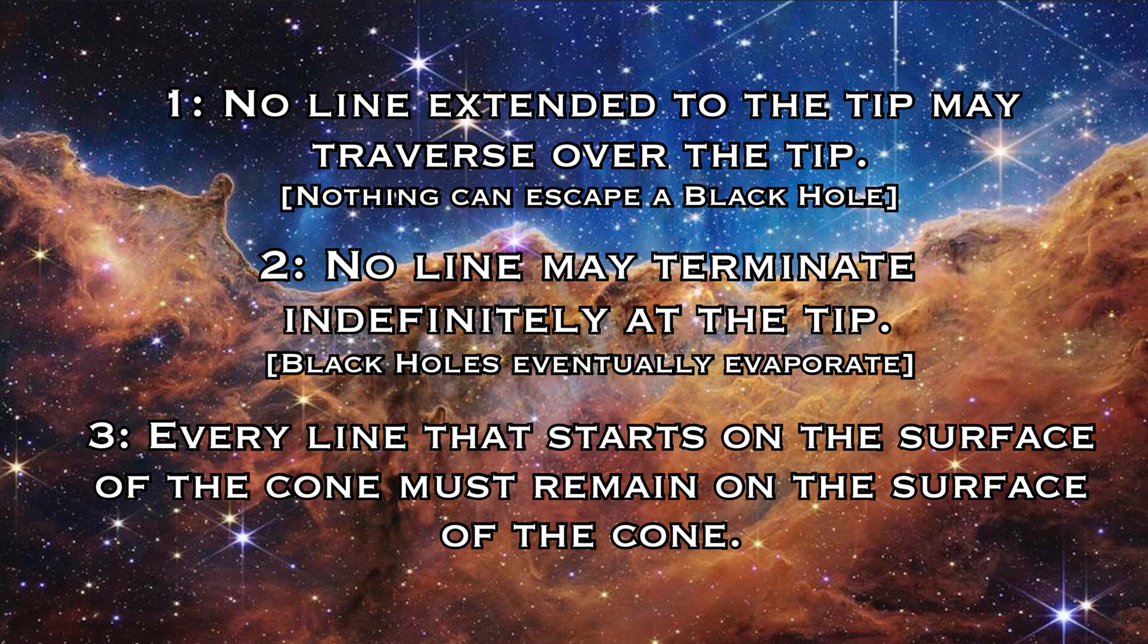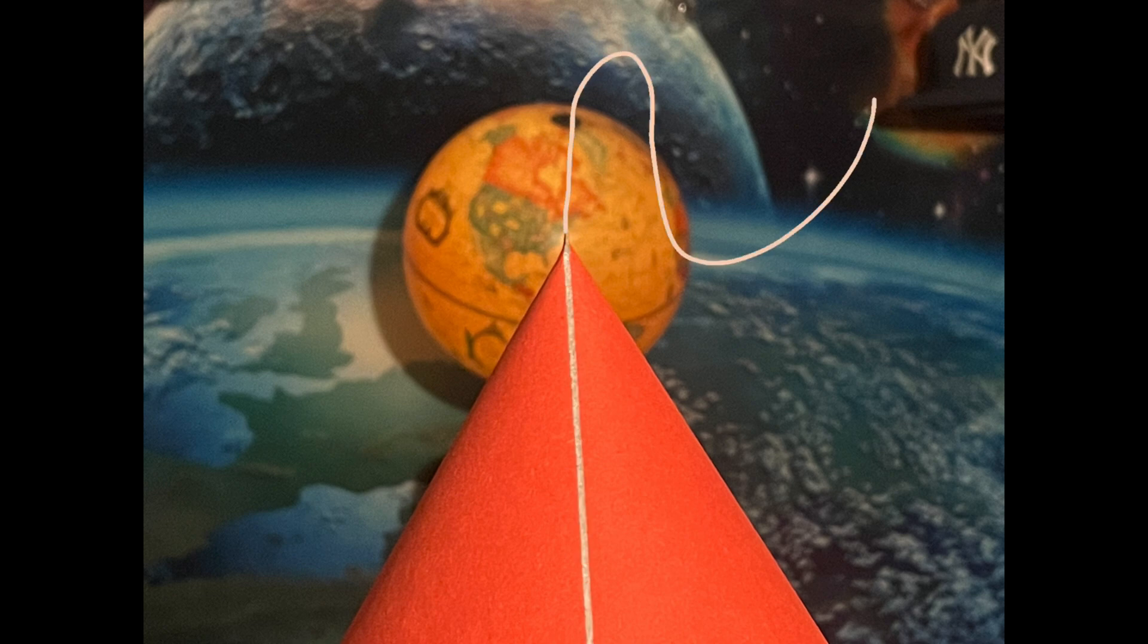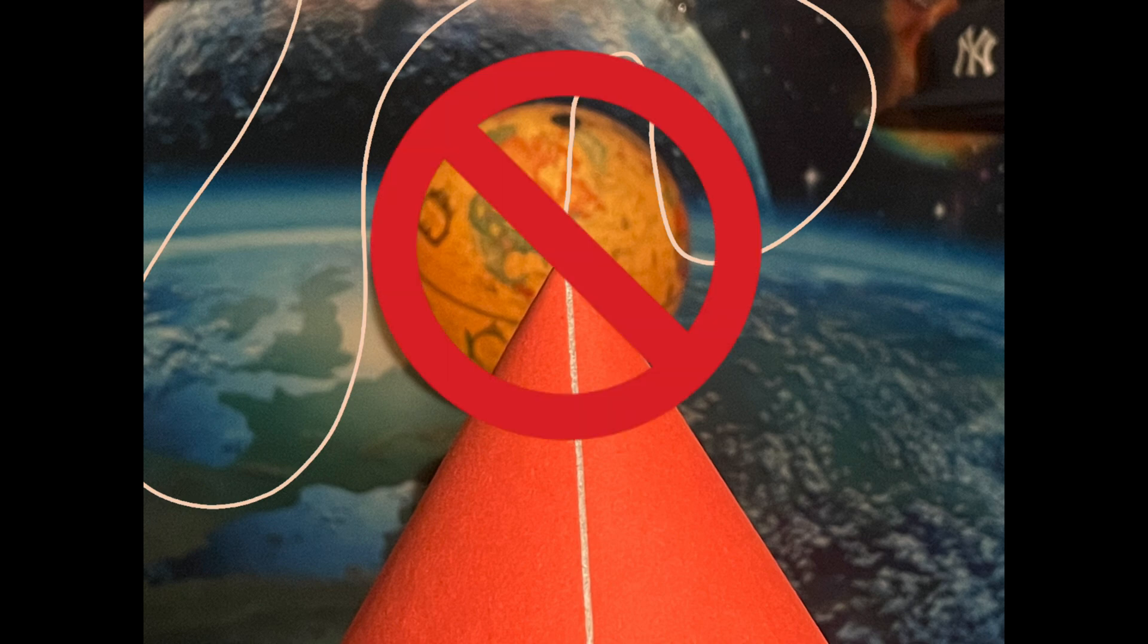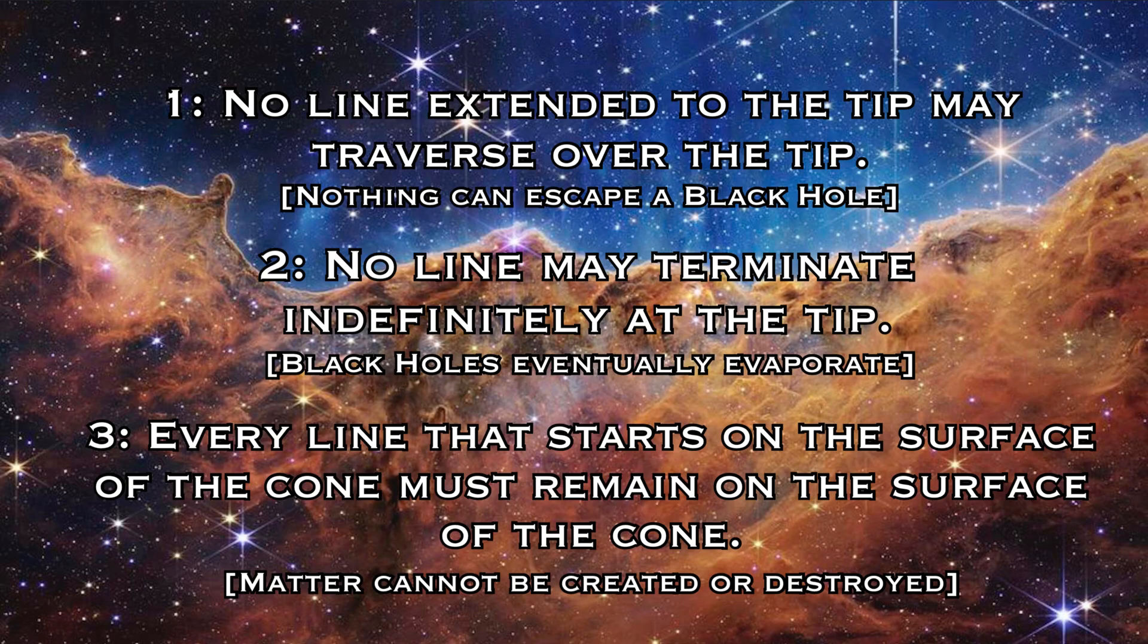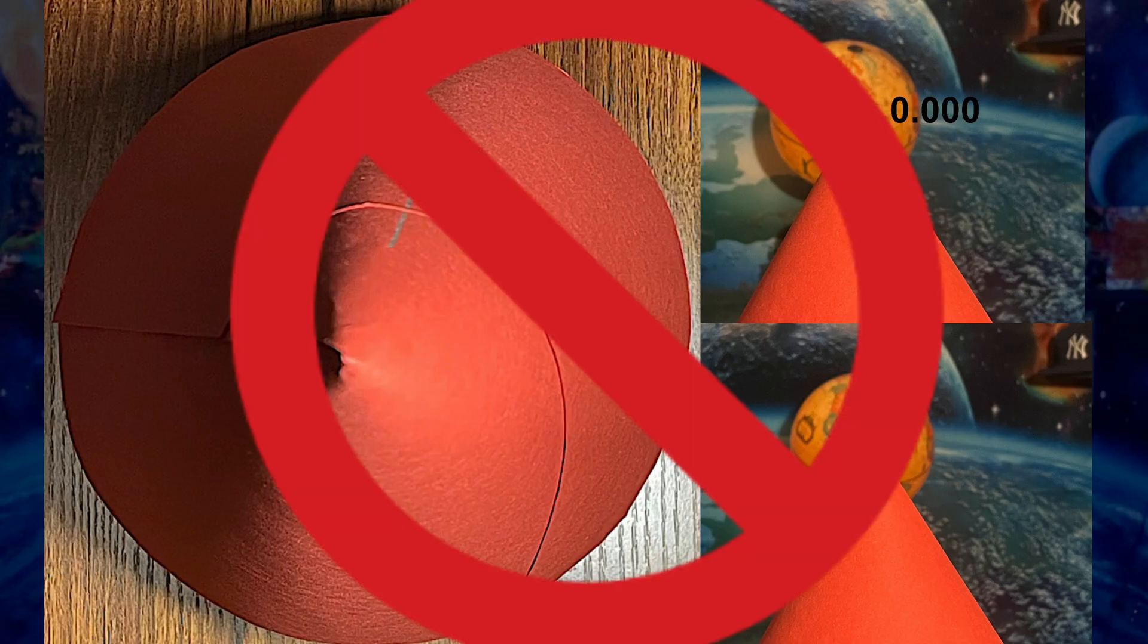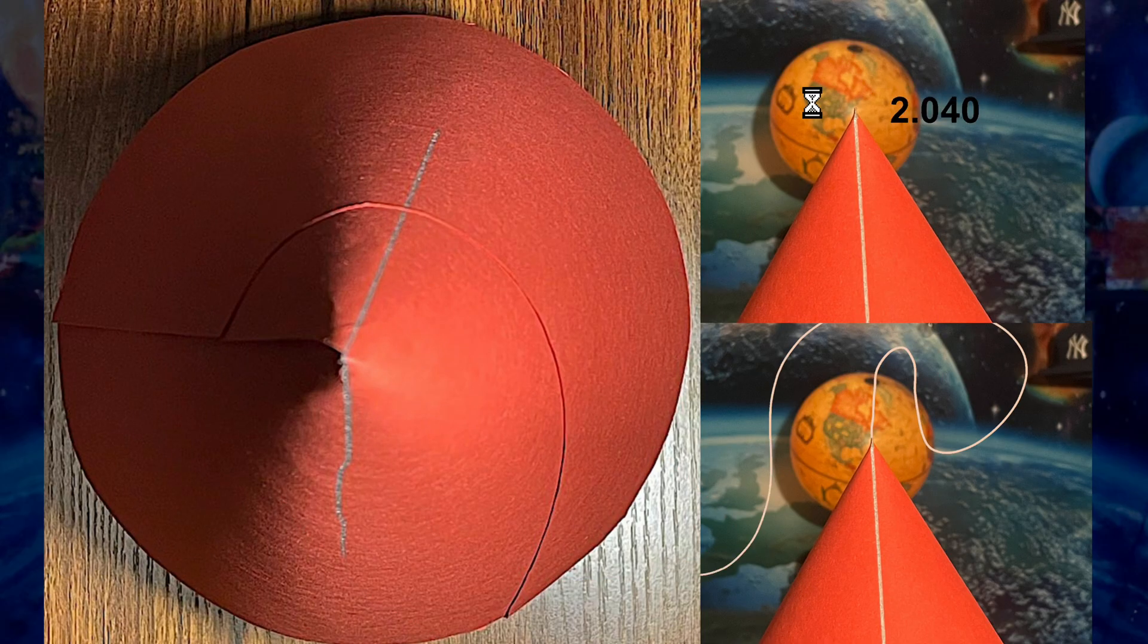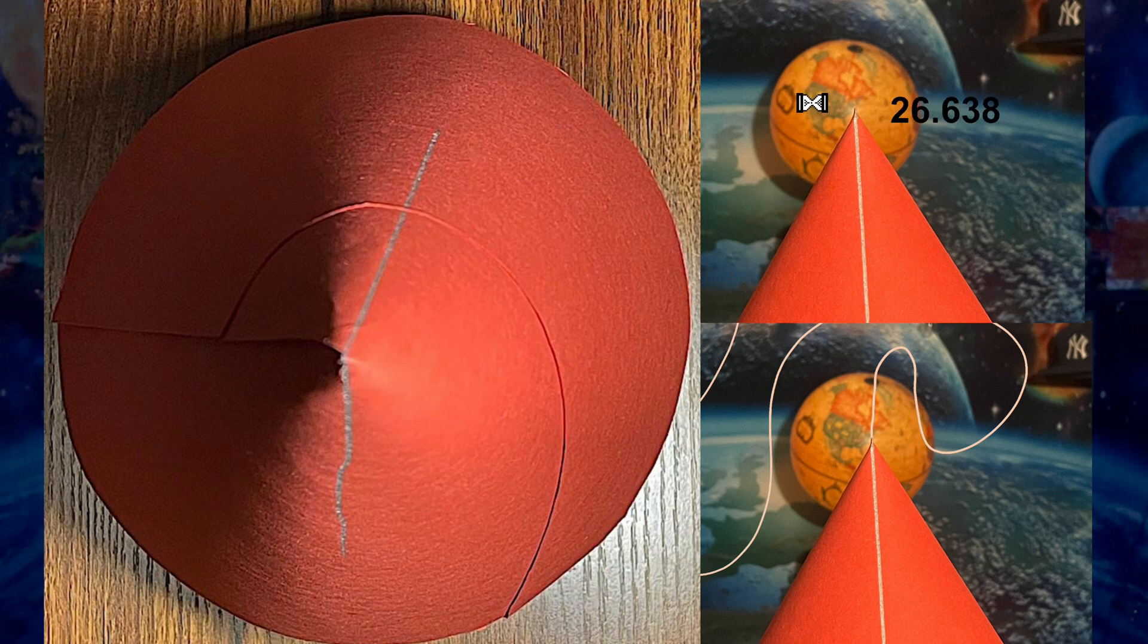The final rule is that every line that starts on the surface of the cone must remain on the surface of the cone. This means the line can't just go off into some higher dimension, parallel universe, or anywhere else. It must remain on the cone. This is akin to the law of conservation of mass, which states that matter cannot be created or destroyed. In this case, destroyed.